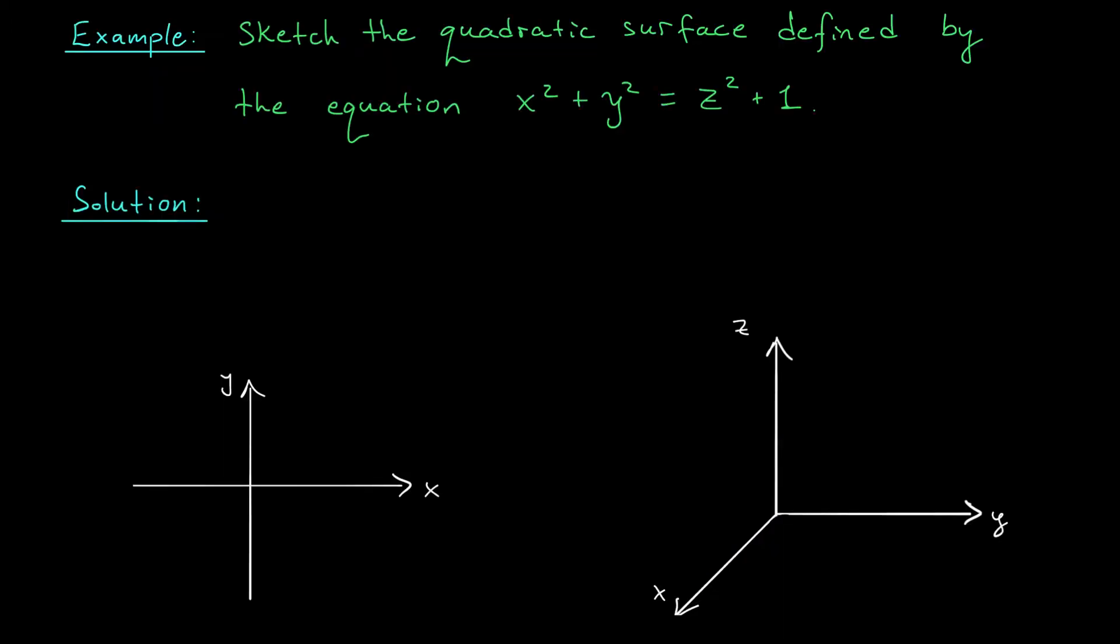For our first example, I'd like to sketch the quadratic surface defined by this equation: x² + y² = z² + 1. Notice that this equation is not of the form z equals f of x, y, and there's no way to write it as such.